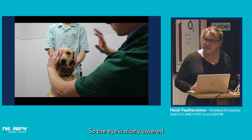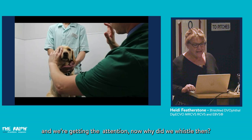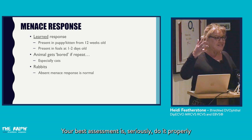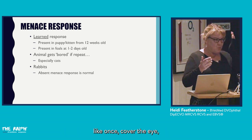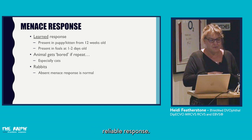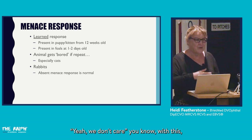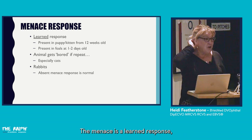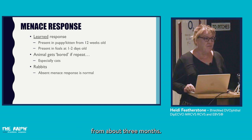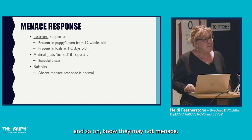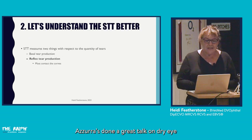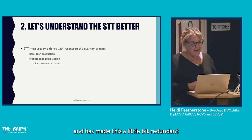Animals get bored if you keep repeating the test — your best assessment is the first time you do it, with the eye covered. Cats especially tend to ignore it, so you can get a lot of false negatives. Rabbits as prey species should never be menaced. The menace is a learned response involving the cortex — it is present from about three months, so in puppy and kitten checks at 8 or 12 weeks the absence of a menace response is not necessarily concerning.